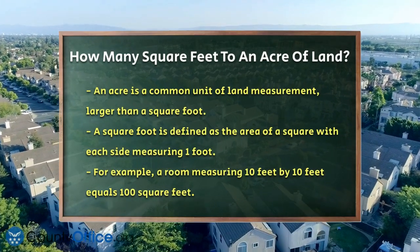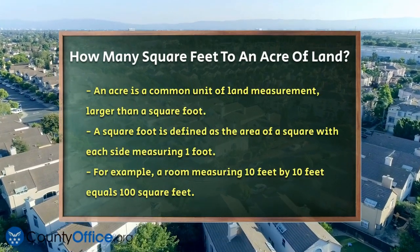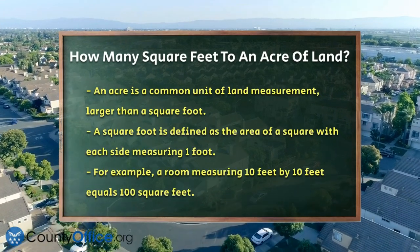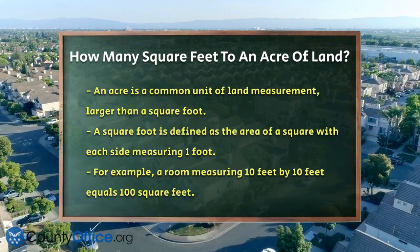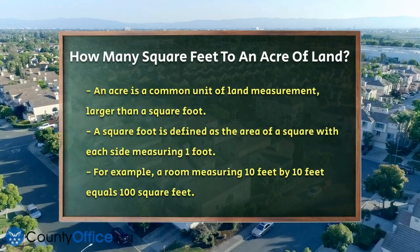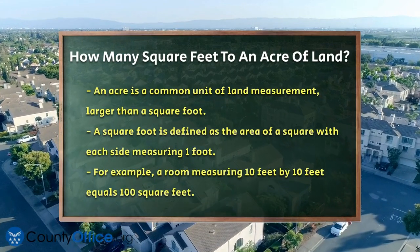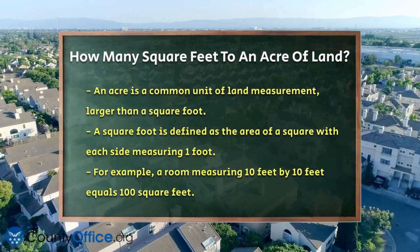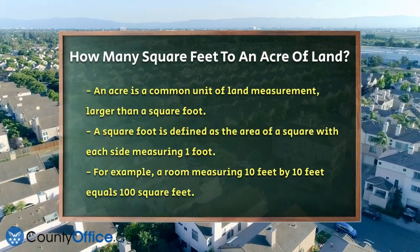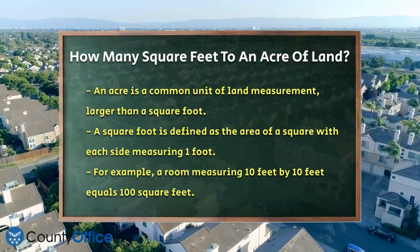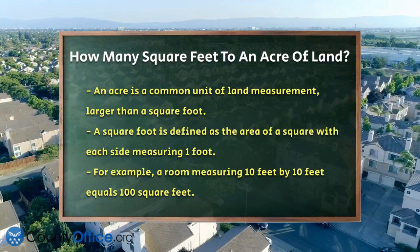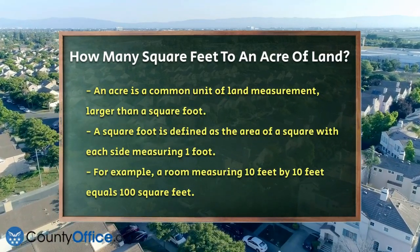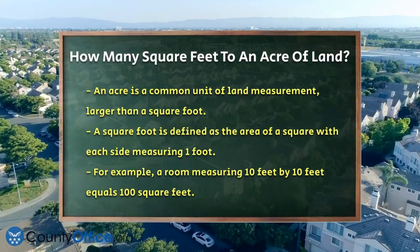When we talk about land measurement, two common units come into play: square feet and acres. Let's understand what a square foot is — it's the area of a square where each side is one foot long. So if you have a room that's 10 feet by 10 feet, it's 100 square feet, because you multiply the length by the width.